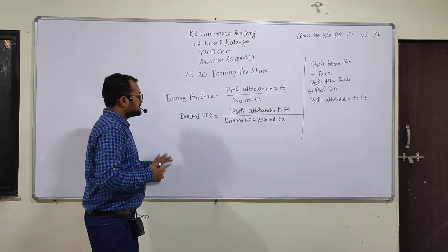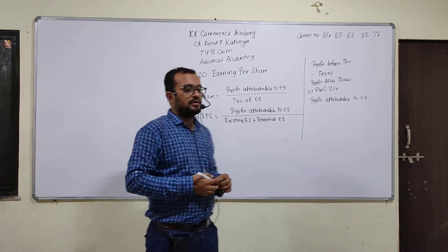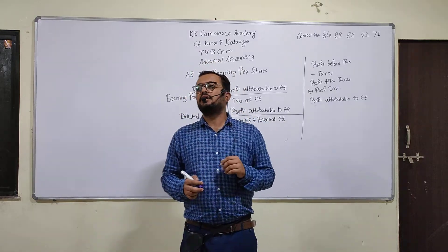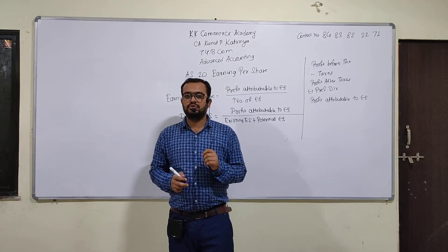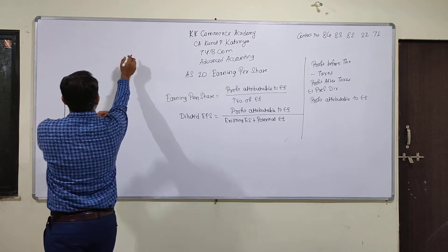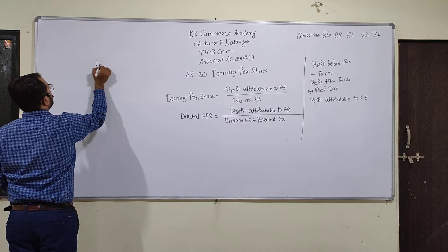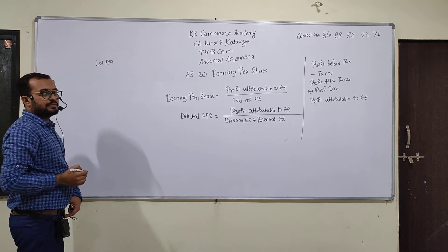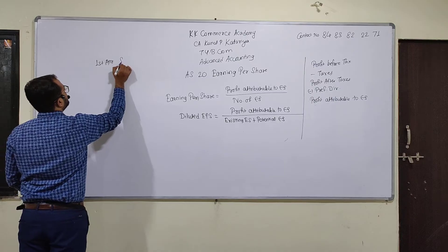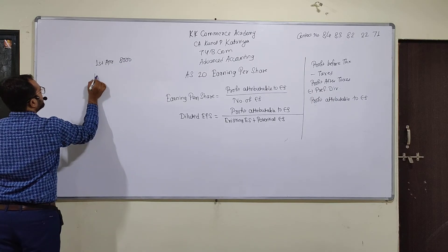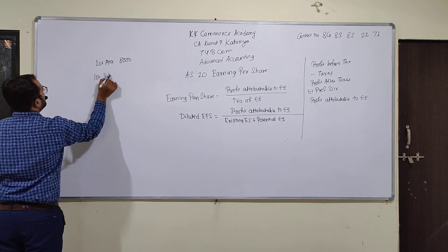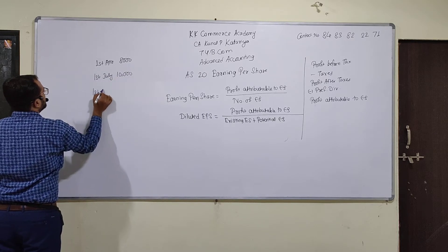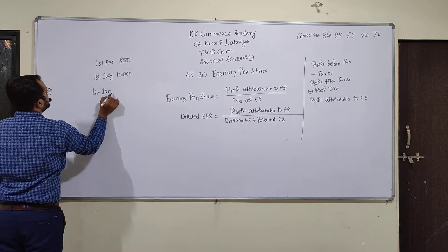Now, with this topic, there is a concept of weighted average equity shares. What is weighted average equity shares? For example, on 1st April I have 8,000 shares; then 10,000 shares are issued. On 1st January, I have 9,000 shares — that is 2,000 more shares.